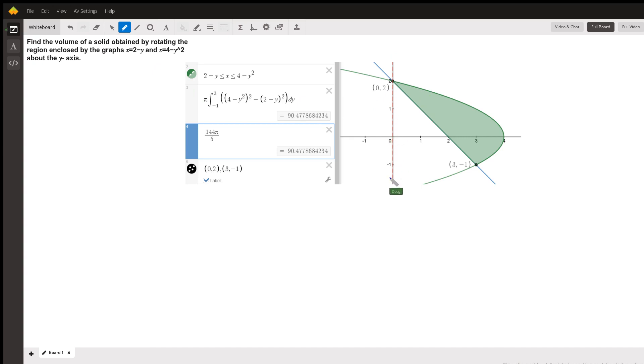We have a choice of whether to use the disk or washer method or the shell method. If we're going to use the disk method, we want a typical disk to look like this, with its radii perpendicular to the axis of revolution. And that looks like the way to go because to calculate the outer and inner radii, we'll be going to the same graphs all the way through the interval from negative 1 to 2 along the y-axis.